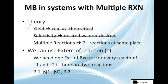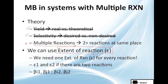Very simple theory: yield, selectivity. Now we're going to see some exercises about multiple reactions. But first we need to see some theory before we jump into the problems. The theory goes something like this. We could use the extent of reaction — hopefully you know it; if not, go back to the videos, because this is a very important part of how to solve this system.